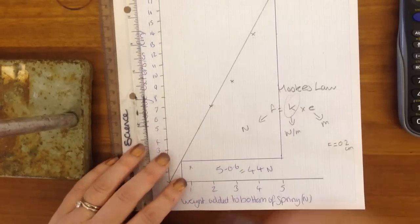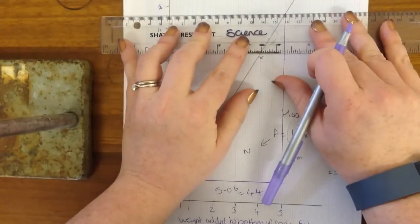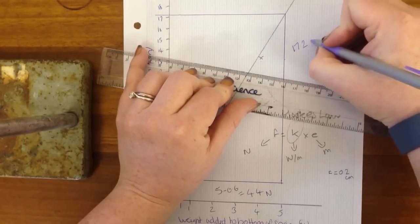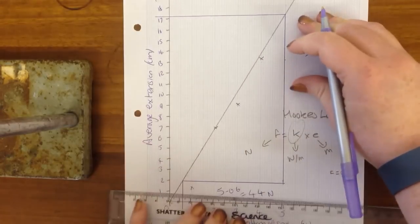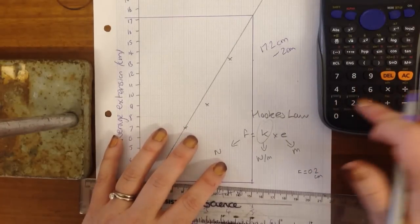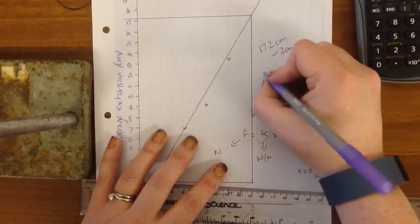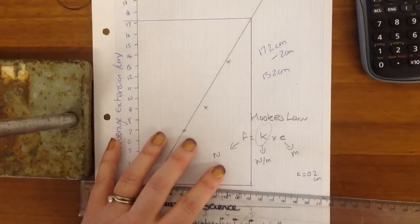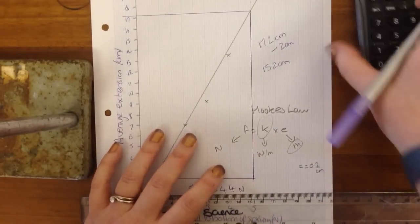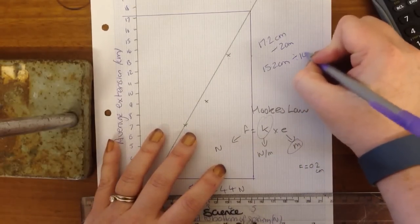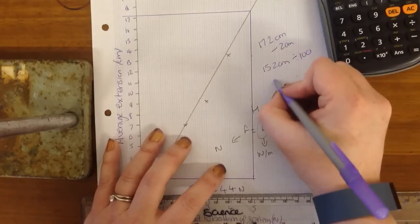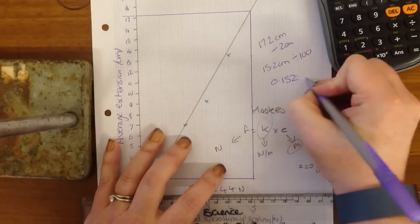Always put your units on here. And then we need to work out how high it is. We draw our line across. That is 17.2 centimeters minus 2 centimeters. So 17.2 minus 2 equals 15.2 centimeters. We need this in meters because that is the standard unit for Hooke's law. So to turn it into meters, we just divide it by 100. So 15.2 divided by 100 equals 0.152 meters.